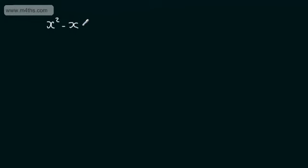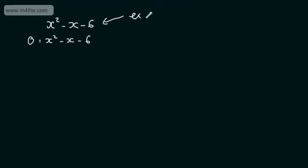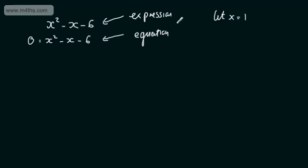If I write x² - x - 6, at the moment this is an expression. As soon as I put 0 = x² - x - 6, it becomes an equation. An expression doesn't have an answer — we can evaluate it. If we let x = 1, we get 1 - 1 - 6 = -6. With an equation, we can solve it and find the roots.